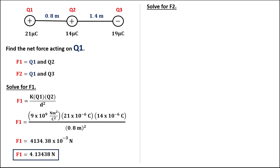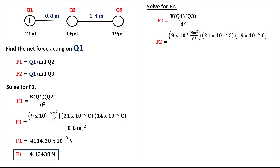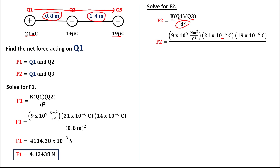Now we solve for force 2 using the same formula. Substituting values: k is Coulomb's constant, 9 times 10 to the power 9, times the first charge — 21 microcoulombs, or 21 times 10 to the power negative 6 — times the third charge, 19 microcoulombs, or 19 times 10 to the power negative 6, all over the distance from charge 1 to charge 3. We add the two distances, which equals 2.2 meters.